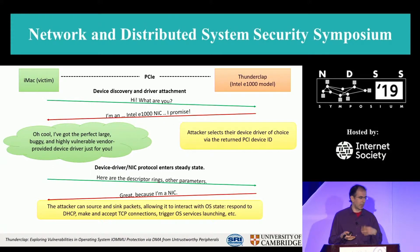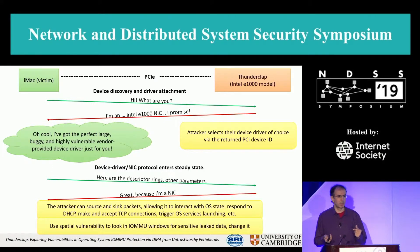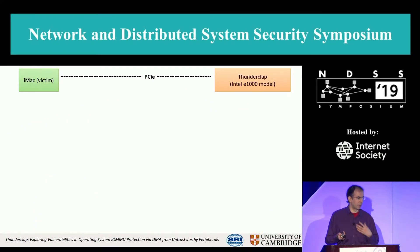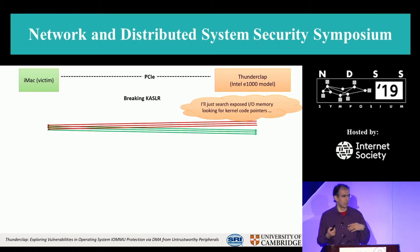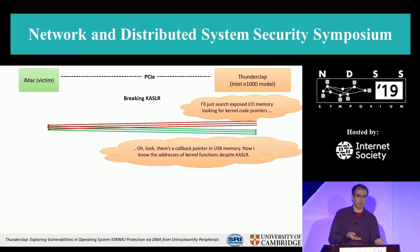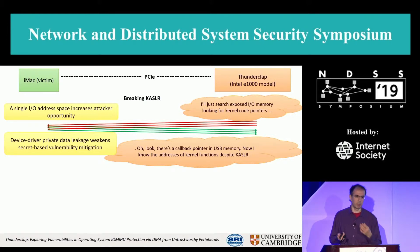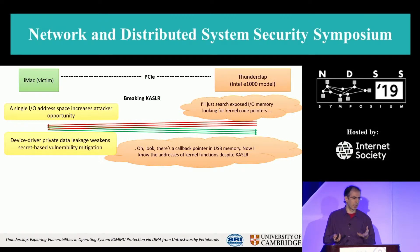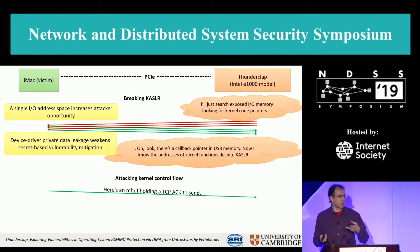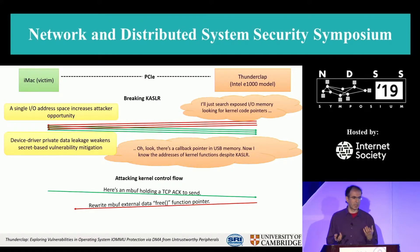We know we can send network packets and start OS services. We can also use the spatial vulnerability to see what other data we can read and write. In the case of the root shell attack, we search IO memory looking for kernel code pointers to break KASLR — and there's one in the USB space, because a shared address space across devices means one device can look at memory exposed to all the others. KASLR is broken because some other part leaked the secret KASLR offset.